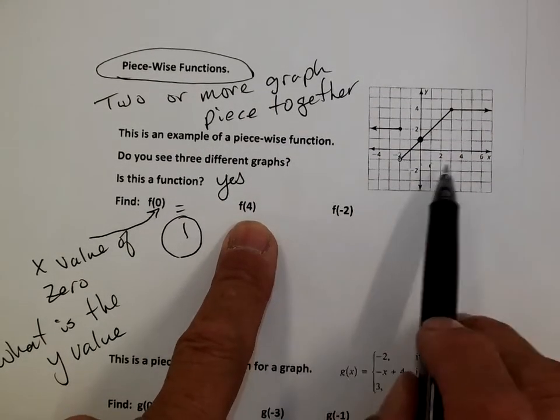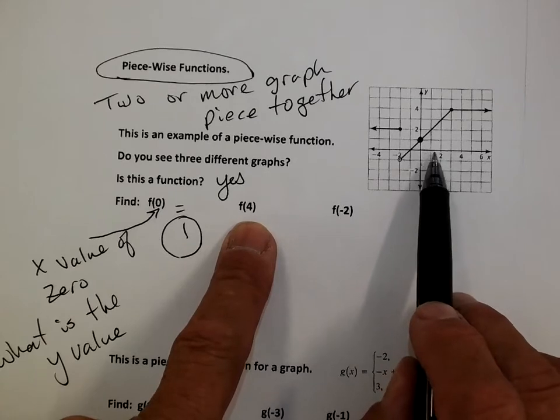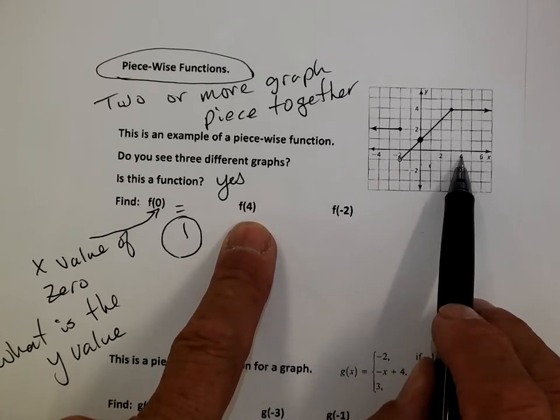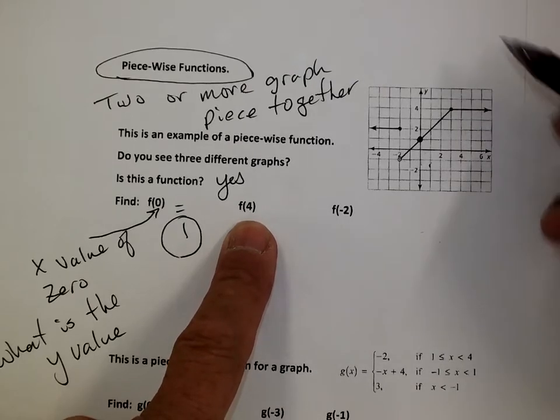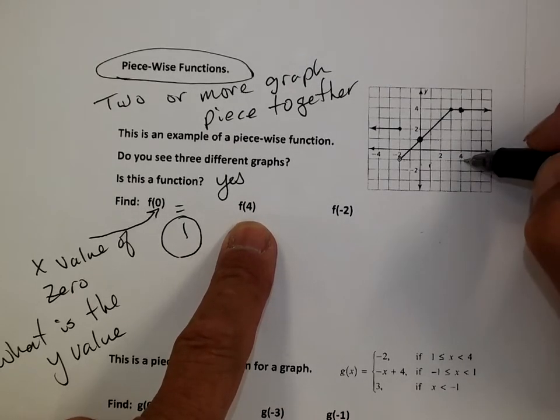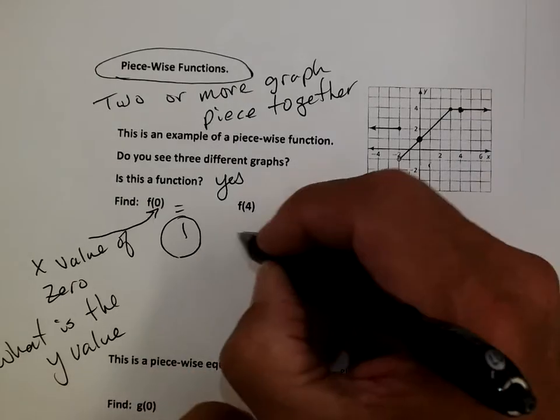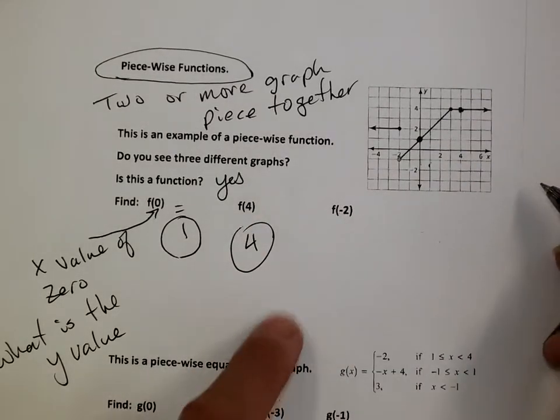F of four. So let's find an x value of four. One. Two. Three. Four. There it is. And what's the height or the y value? It is also four. It's that right there. F of four is four. Because that's its height.